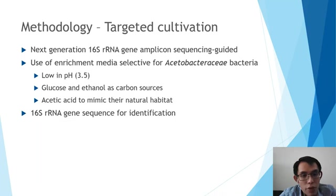as well as a small amount of acetic acid to mimic their natural habitat, were useful for recovering Acetobacteraceae from the weaver ant. All isolates obtained were identified using the 16S rRNA gene. As a result, bacterial strain F3b2 was isolated from one of the weaver ant colonies.